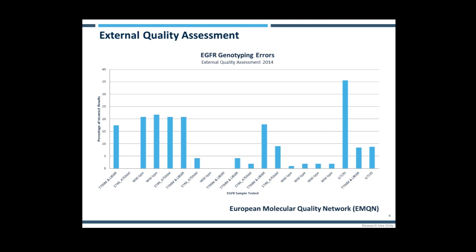Assay failures occur far more frequently than we should be happy with. These results are shown from a proficiency testing scheme, EMQN, from 18 EGFR samples sent out to 100 different laboratories, presenting genotyping errors found. In the wild types, up to 20% of reads were incorrect — a result of false positives. Even more concerning, the G719S results show 35% read either incorrect mutations or were false negatives. While these schemes don't yet cover next-generation sequencing, these results drive home the need to monitor assay failure in your laboratory.